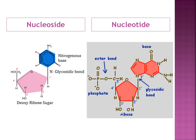With the help of these diagrams, we will understand the difference between nucleoside and nucleotide. A nitrogenous base is attached at the 1' position of a pentose sugar with the help of a glycosidic bond — this combination is called a nucleoside. When a phosphate group joins this nucleoside, a nucleotide is formed. The phosphate group is attached at the 5' position through an ester bond. The combination of pentose sugar and nitrogenous base is the nucleoside — that is the difference between these two units.